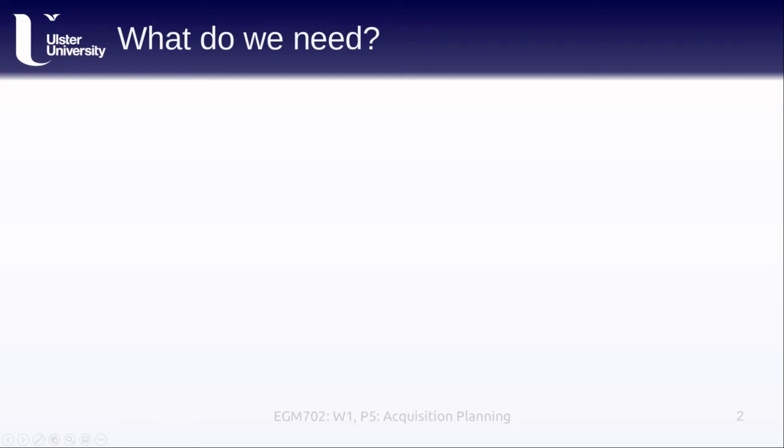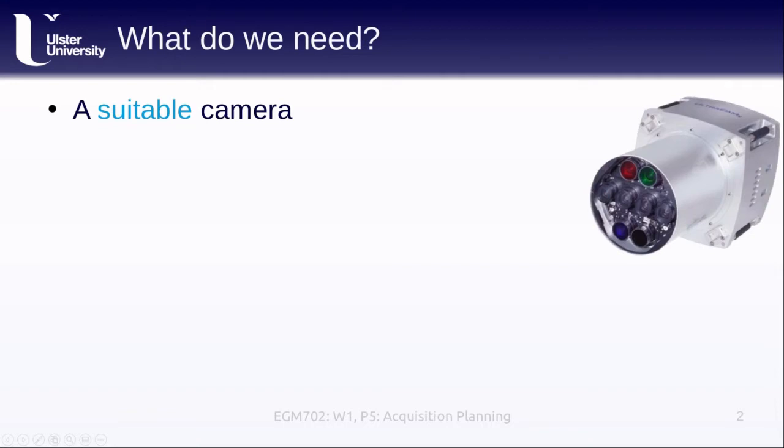The first thing that we need is a camera, and it should be suitable, which means we want a camera that is fit for whatever purpose we are intending to do. If we're trying to make really high-resolution, accurate orthophotos, we might use a really expensive mapping camera like the one shown here.